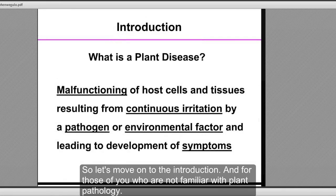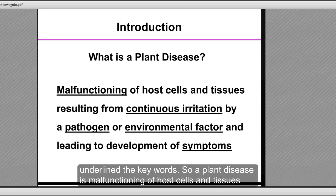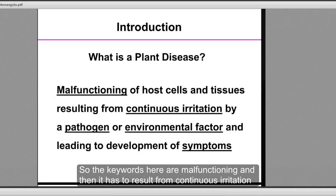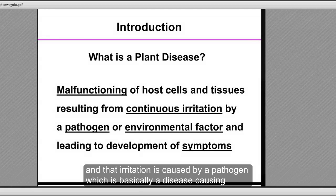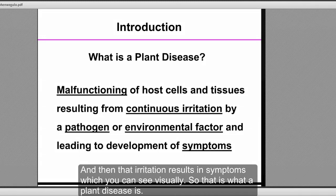So let's move on to the introduction. For those of you who are not familiar with plant pathology, what do we mean when we say we are dealing with a plant disease? A plant disease is malfunctioning of host cells and tissues resulting from continuous irritation by a pathogen or environmental factor and leading to development of symptoms. The keywords here are malfunctioning, continuous irritation caused by a pathogen — which is basically a disease-causing organism — or an environmental factor such as chemical injury or adverse weather conditions. That irritation results in symptoms, which you can see visually.